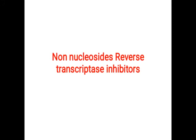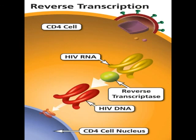The next part covers non-nucleoside reverse transcriptase inhibitors (NNRTIs). These drugs do not have a similar structure to DNA or RNA nucleotide bases — they are devoid of nucleotide base structures. The mechanism of action is applicable for RNA viruses, which contain the reverse transcriptase enzyme that converts RNA into DNA. Normally in CD4 cells, when HIV enters, the enzyme reverse transcriptase converts HIV RNA into HIV DNA, which then enters the nucleus of the CD4 cell.